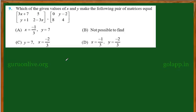The options are: X is equal to minus 1 by 3, Y equal to 7. Not possible to find. Y equal to 7, X equal to minus 2 by 3. And the last one is X is equal to minus 1 by 3, Y equal to minus 2 by 3.